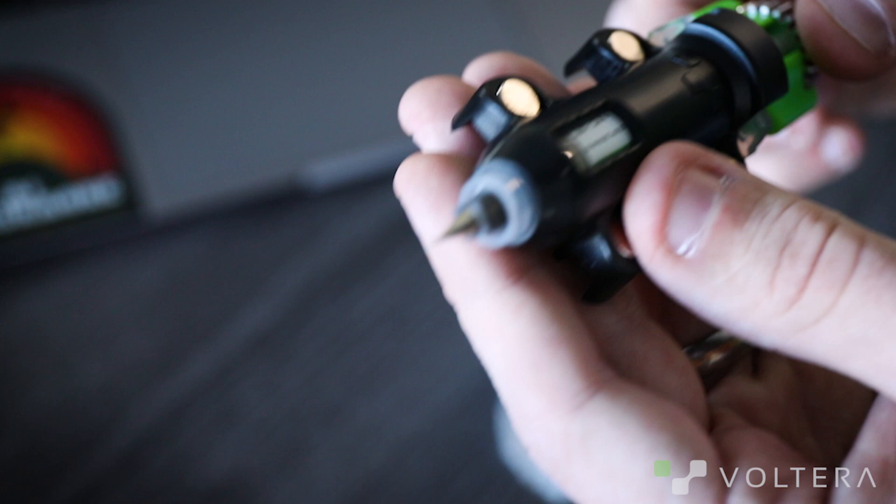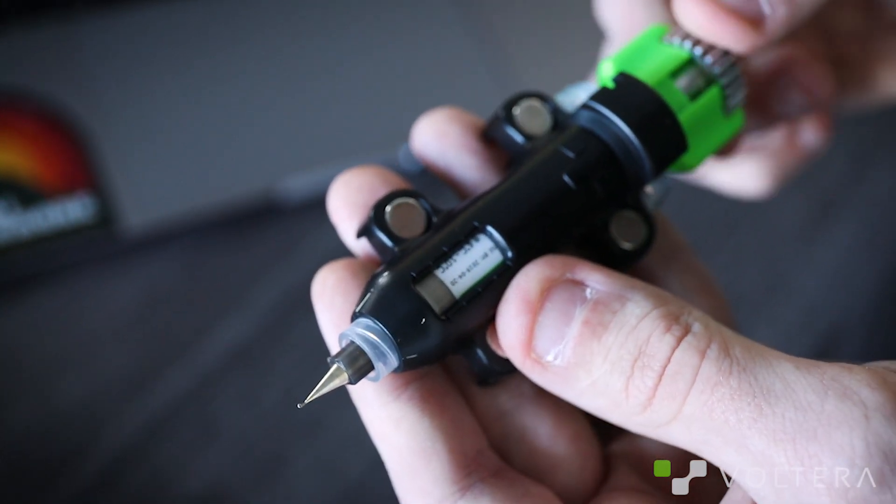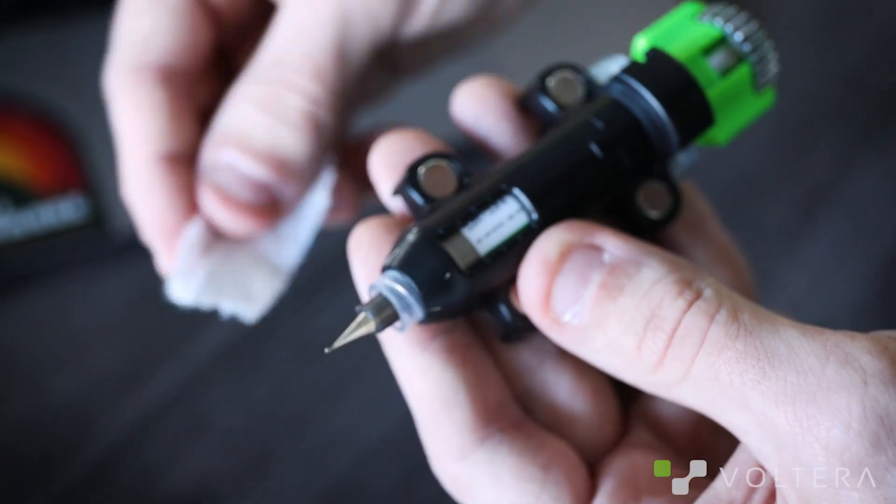Alright, let's talk about pressure. The first thing you'll do before mounting the dispenser is prime it. This makes sure the starting pressure is correct. It's a simple process. Just turn this gear counterclockwise until a small amount of ink comes out of the tip. Then turn the gear back a half turn, so from 12 to 6 o'clock.